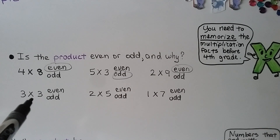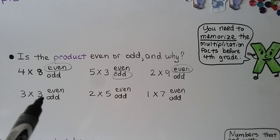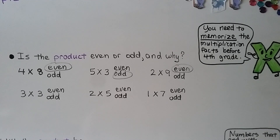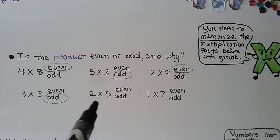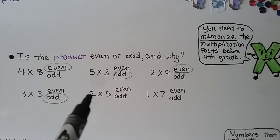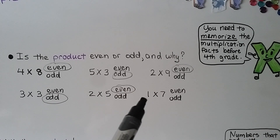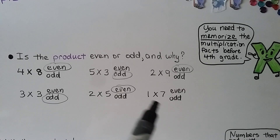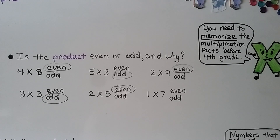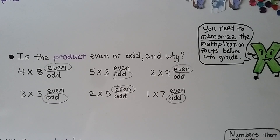How about 3 times 3? 3 is an odd number and we have two of them — an odd number times an odd number. If you said the product is odd, you're correct. For 2 times 5: 2 is an even number, so at least one factor is even, which means our product will be even. For 1 times 7: 1 is odd and 7 is odd — two odd factors — so the product will be odd. Two odd factors give an odd product.